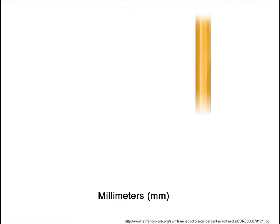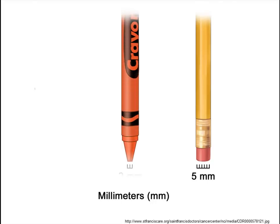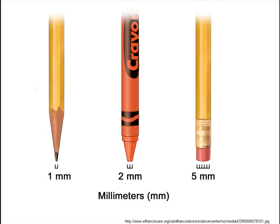Here we have a brand new pencil. The eraser has a width or a diameter of about 5 millimeters. If we look at a brand new Crayola crayon, the tip on that crayon has a diameter or width of about 2 millimeters. And if we look at a first grader's favorite tool, the brand new sharpened pencil, the pencil tip has a diameter or width of about 1 millimeter.